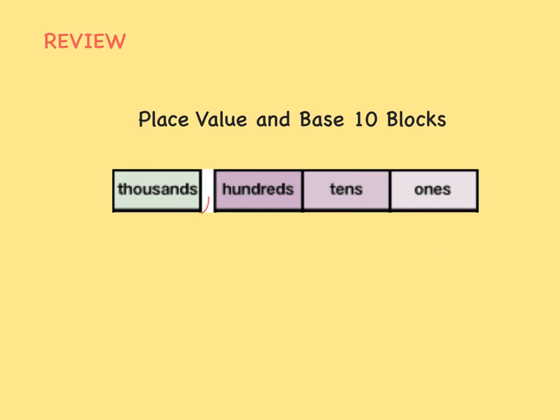Check it out! You already know that place value can be represented using base 10 blocks. The ones place is represented by one unit block. The tens place is made up of 10 unit blocks, or we call it a rod.